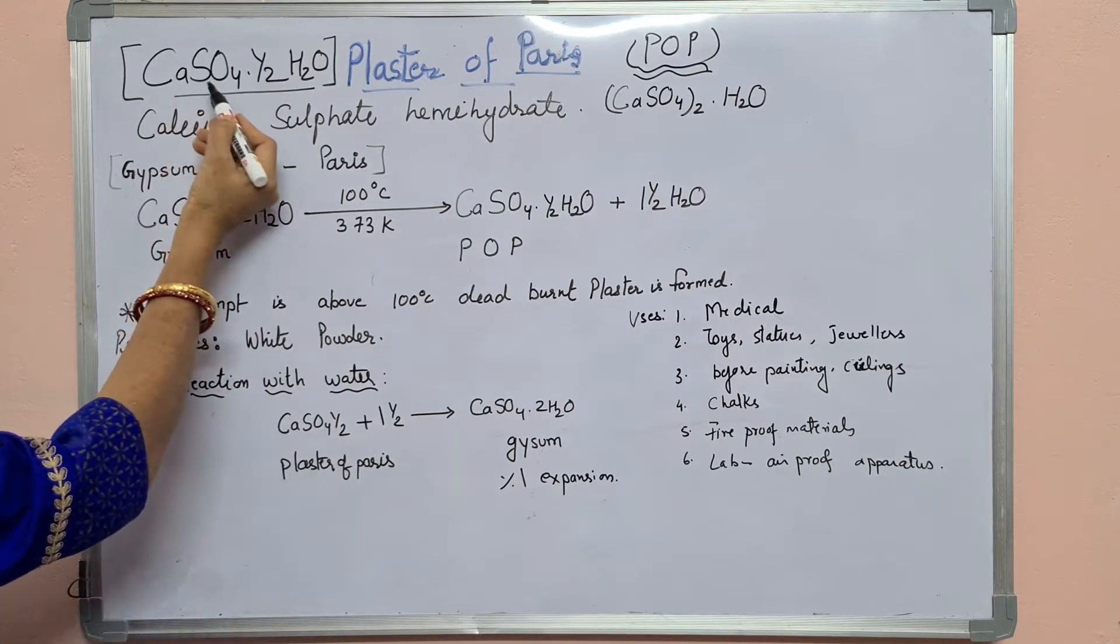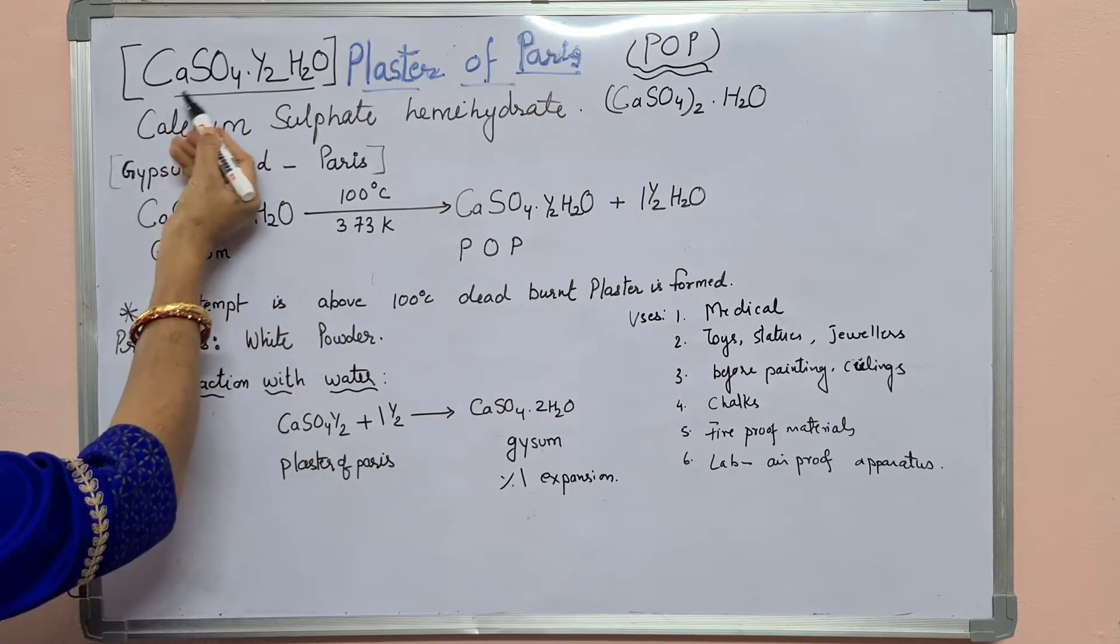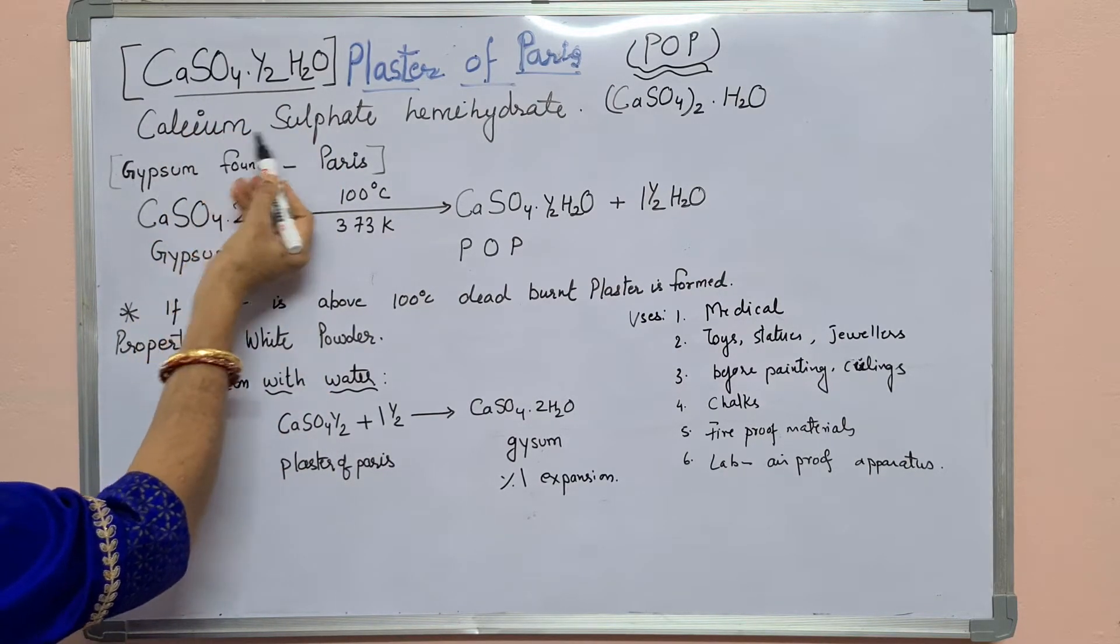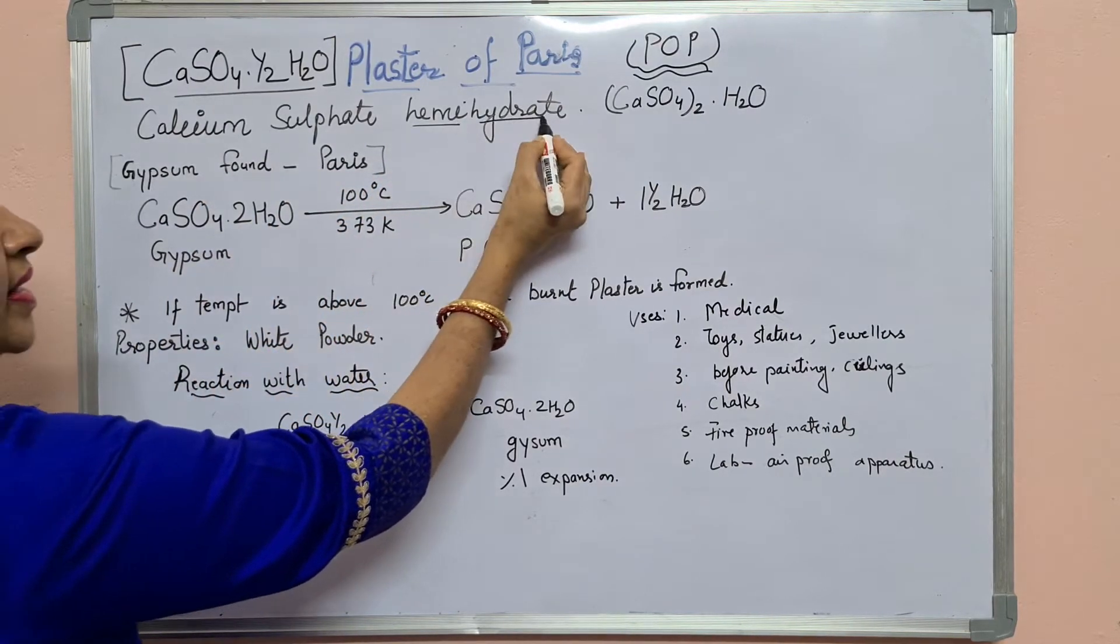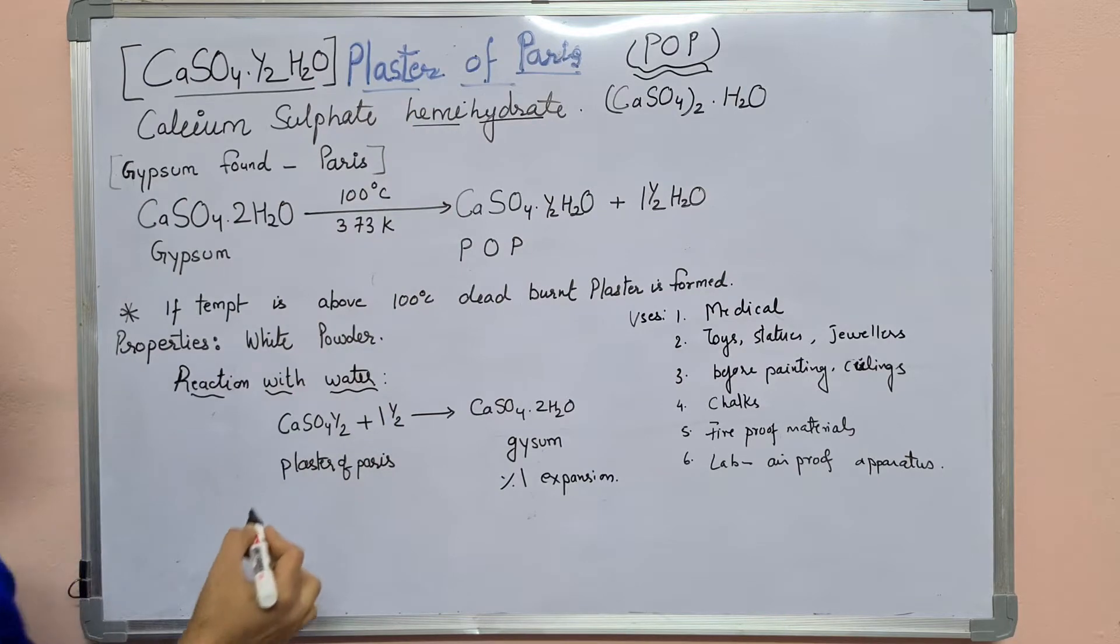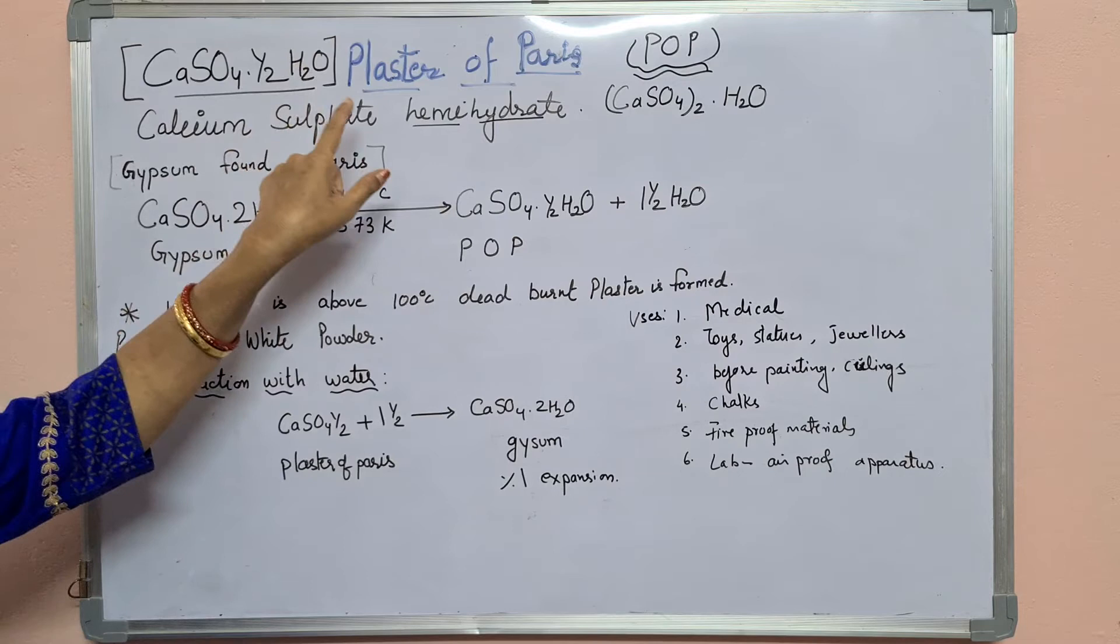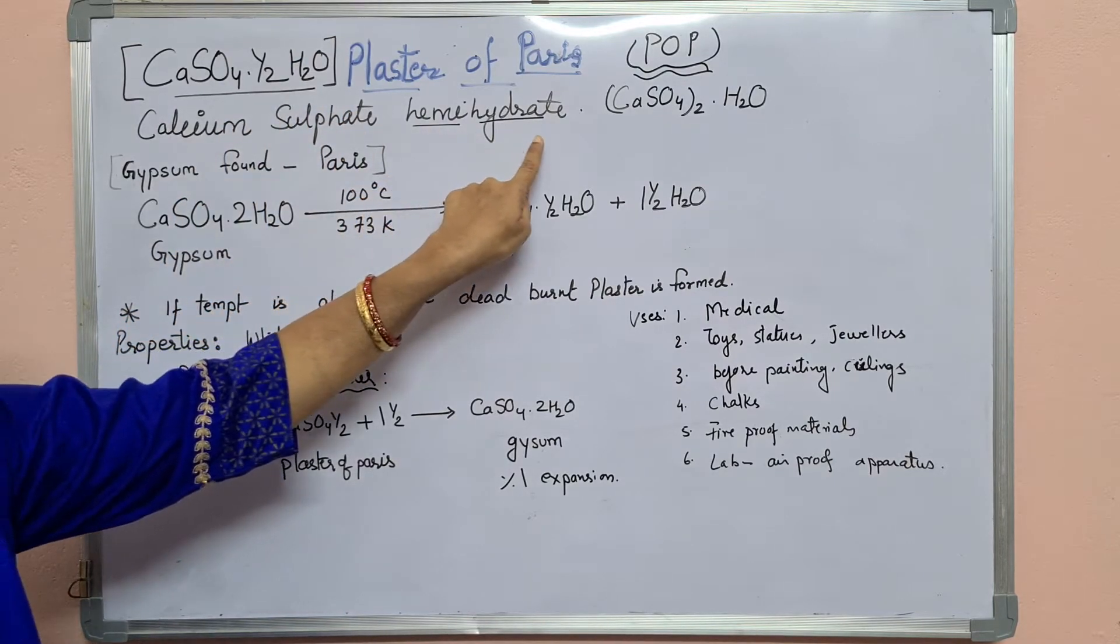Plaster of Paris, commonly known as POP, its formula is CaSO4·½H2O - calcium sulfate hemihydrate. Hemi means half, hydrate. So hemihydrate. Once again, the name is calcium sulfate hemihydrate.